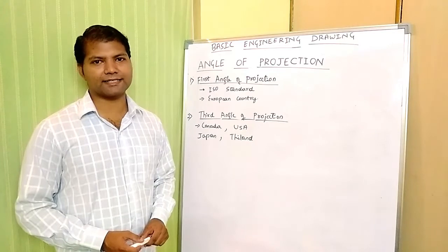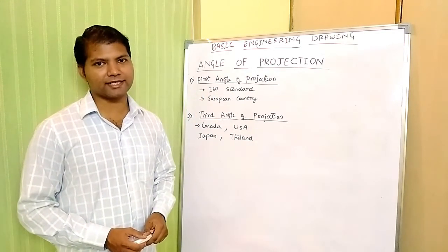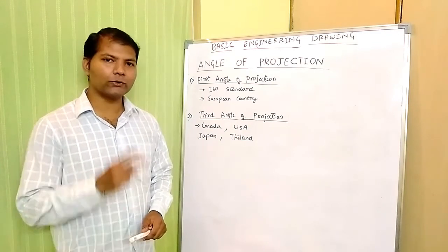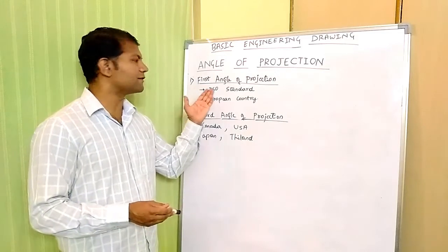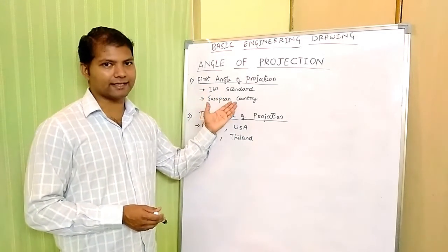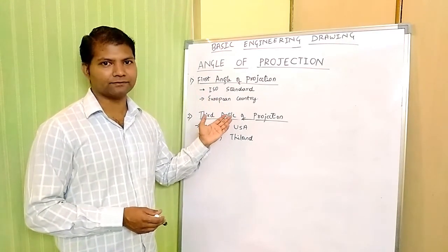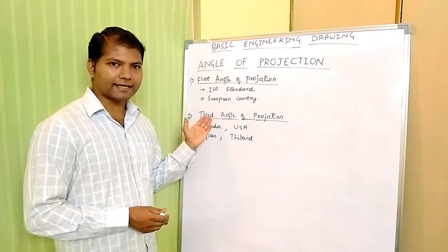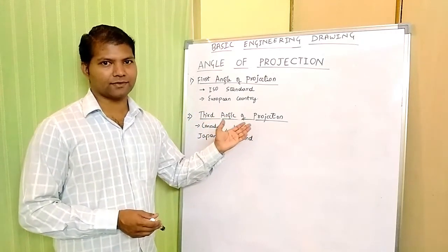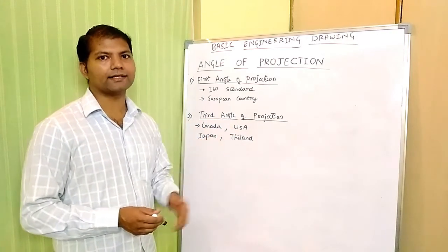Friends, first we will understand what angle of projection means. Angle of projection is a kind of system of projection which has got two types. The first is first angle of projection which deals with ISO standard and operates in European countries. Whereas, the second system is third angle of projection which operates in Canada, USA, Japan and Thailand.